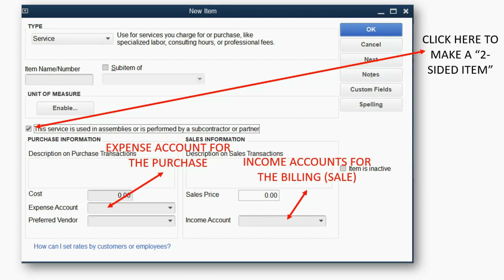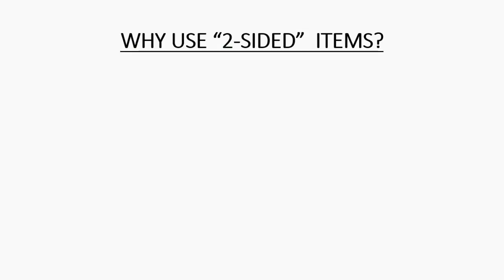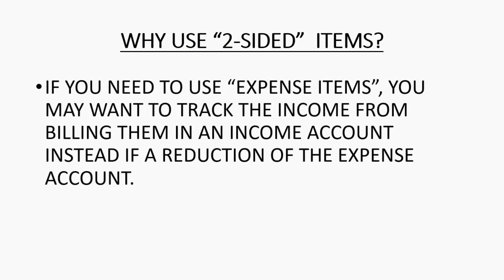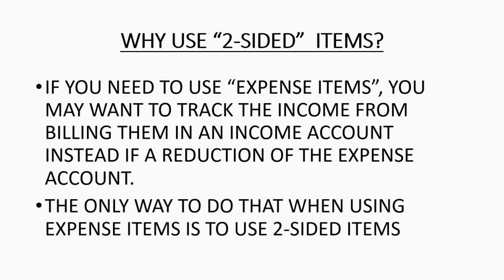The expense account goes up when we buy, and the income account goes up when we bill. So why would we use two-sided items? Well, if you need to use expense items, you may want to track your income from billing them in an income account instead of a reduction of the expense account. The only way to do that when using expense items is to use two-sided items.